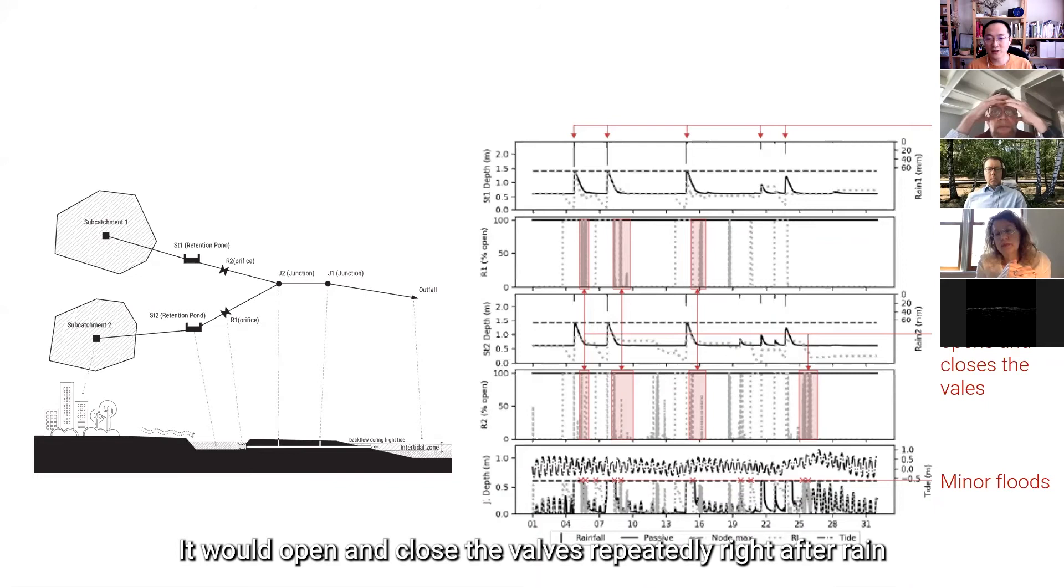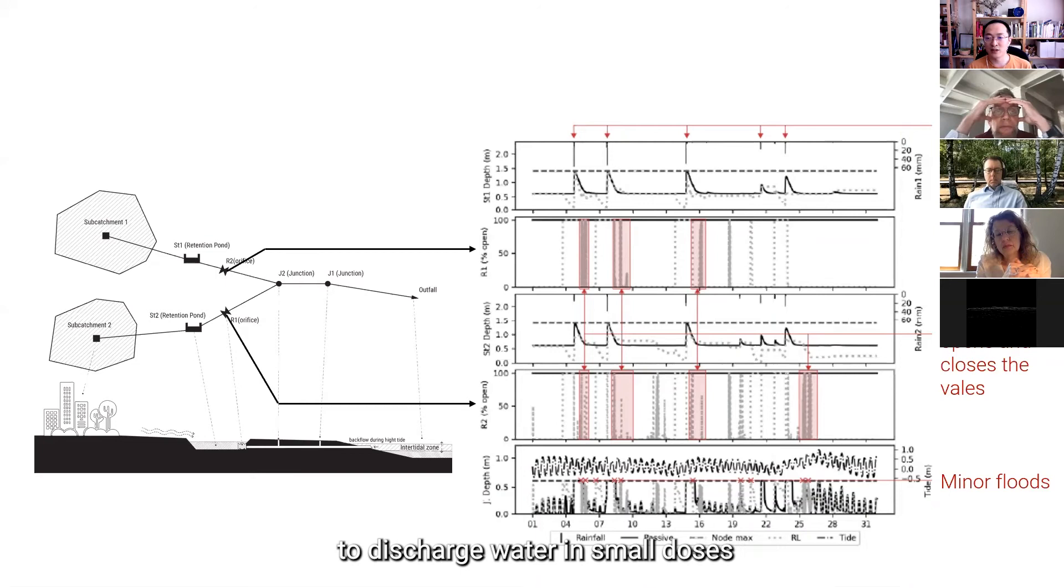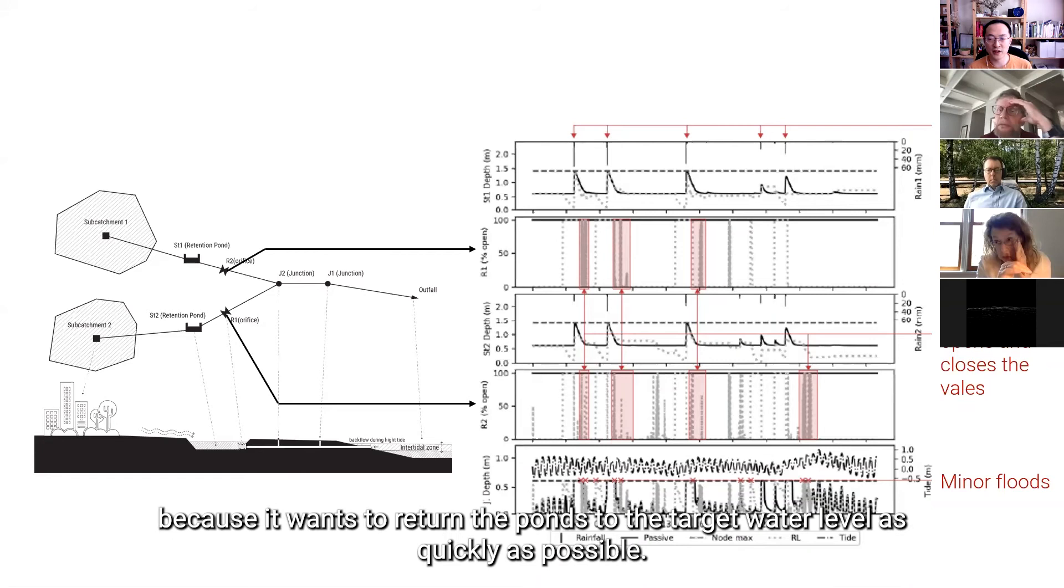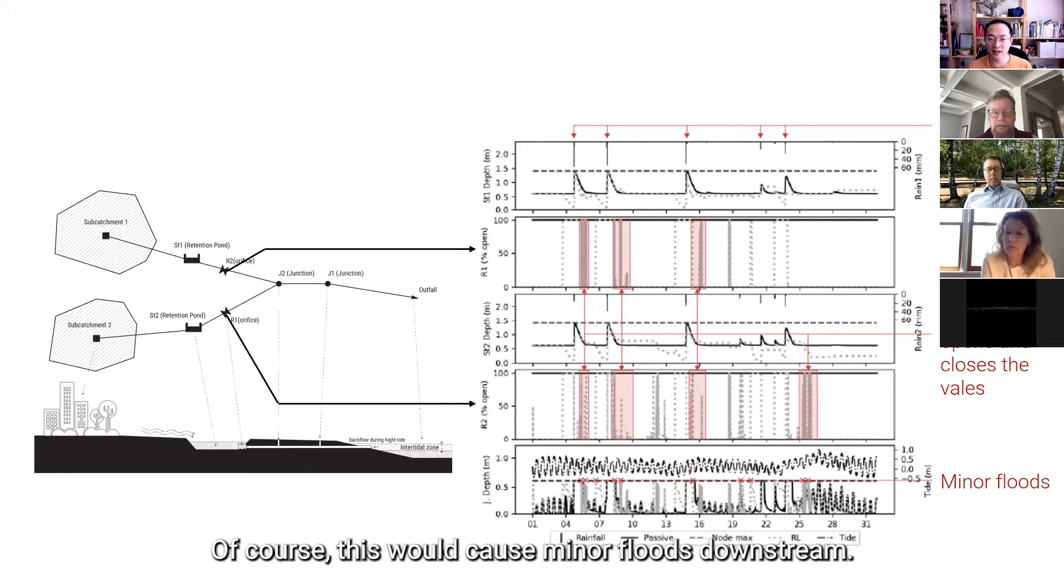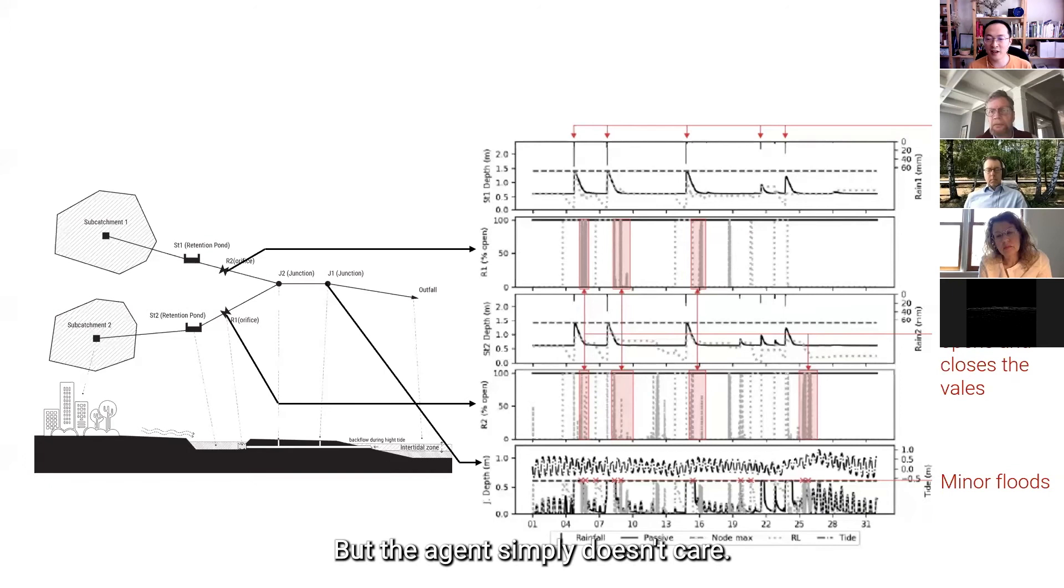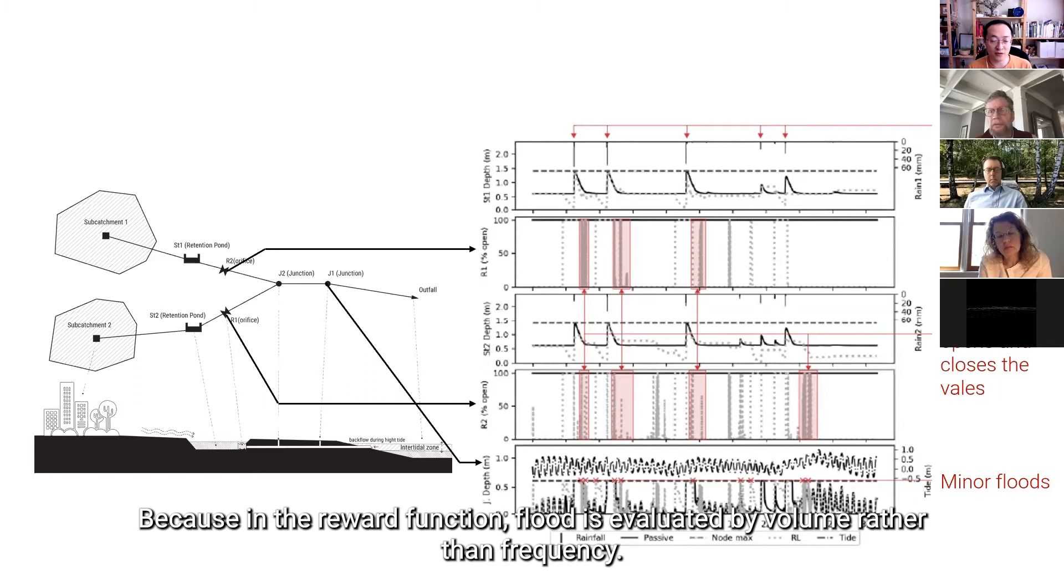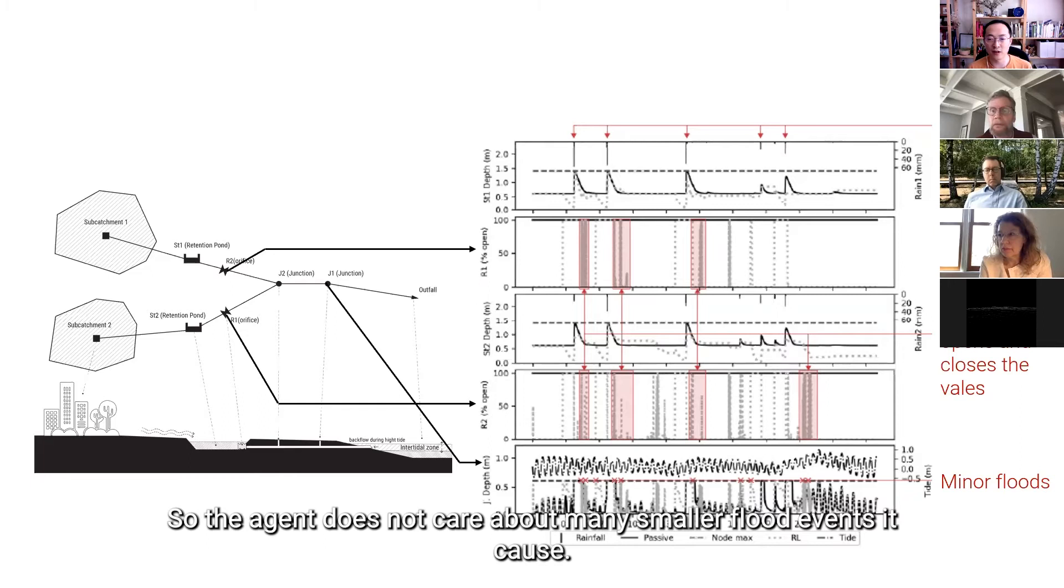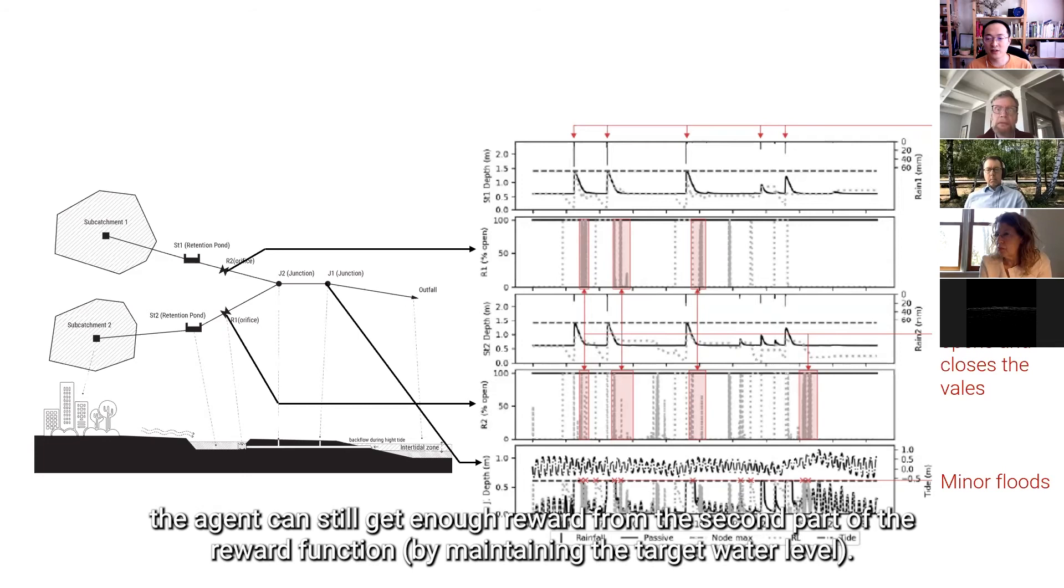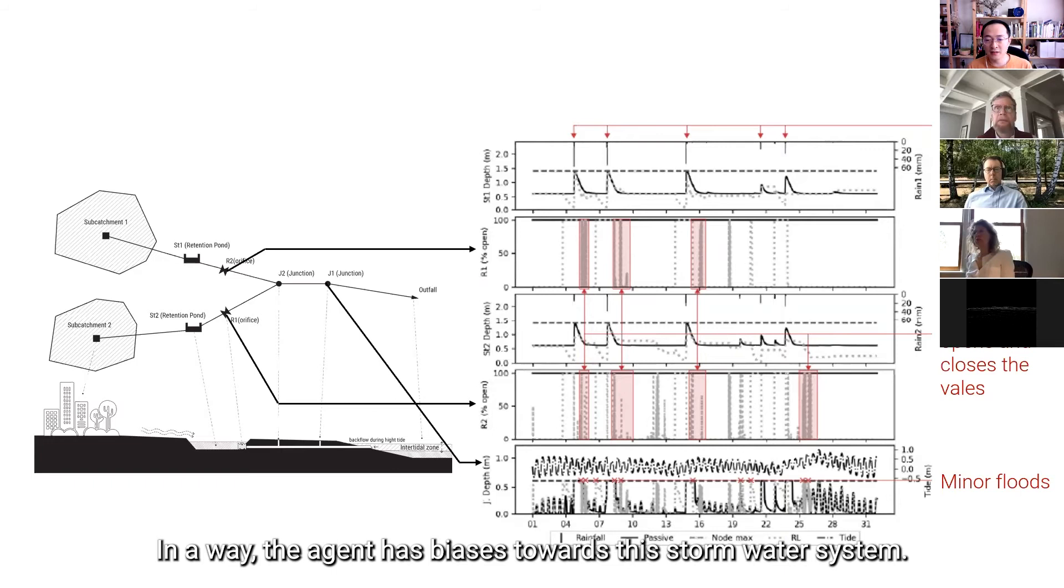It would close and open and close the valves repeatedly right after the rainfall to discharge water in small, really small doses. Because it wants to return the ponds to a target water level as quickly as possible. And of course, this behavior would cause some minor floods downstreams. But the agent simply doesn't care. Because it can still get rewards for doing so. Because in the reward function, flood is evaluated by volume rather than frequency. So, the agent does not care how many small flood events it caused, as long as the overall volume is under a threshold. And the agent can still get enough reward from the second part of the reward function. And in a way, the agent has some bias towards this stormwater system, which gives scientists enough motivation to implement another function to eliminate that bias.